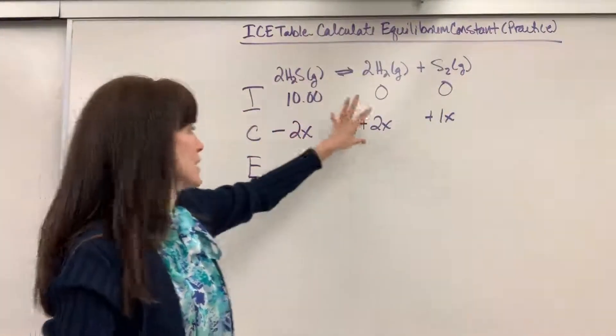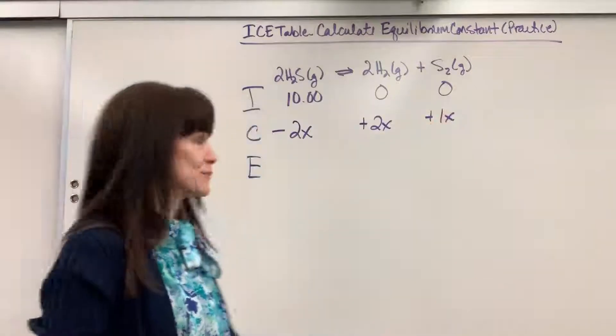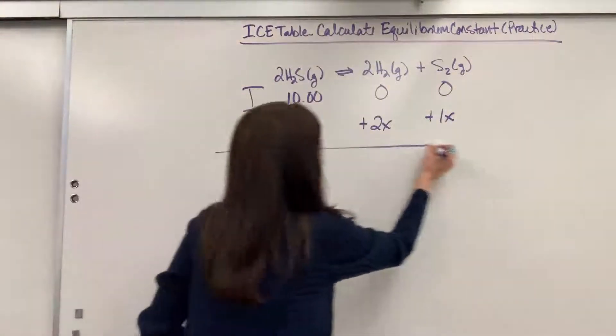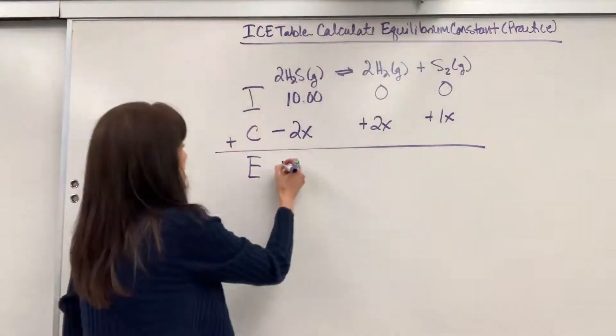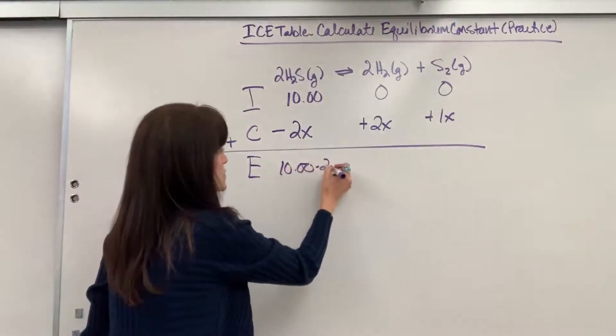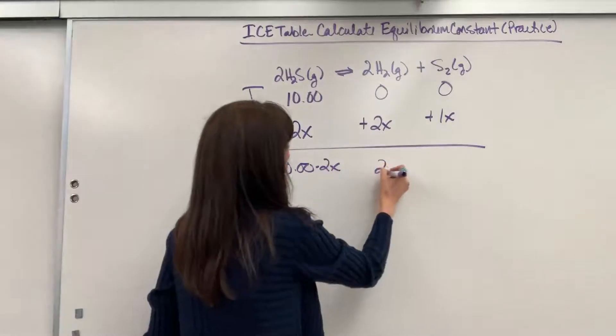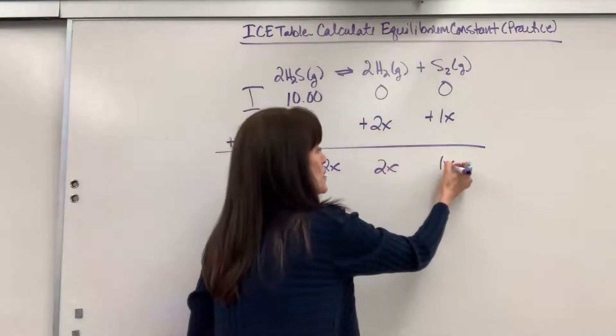We will lose the reactants and gain the products as this finally comes into equilibrium. Lose that amount here, gain the amount on the products. And then E, of course, is really easy. All we have to do is add those together. So we're going to have 10 minus 2x, 0 plus 2x which is 2x, 0 plus 1x which is 1x.